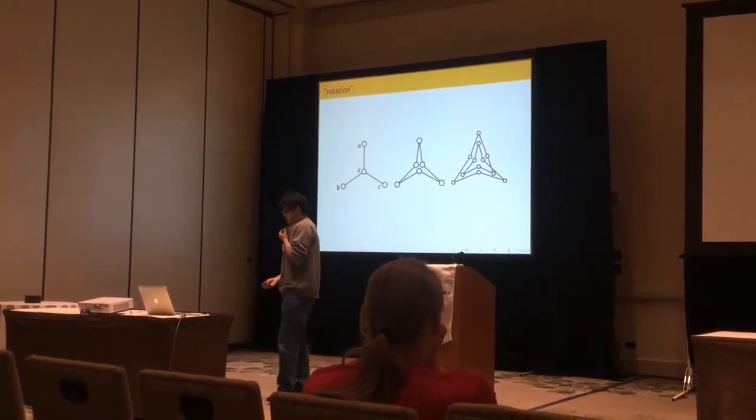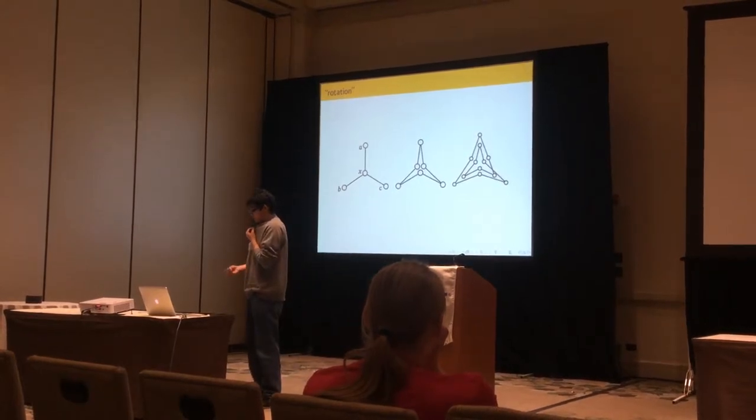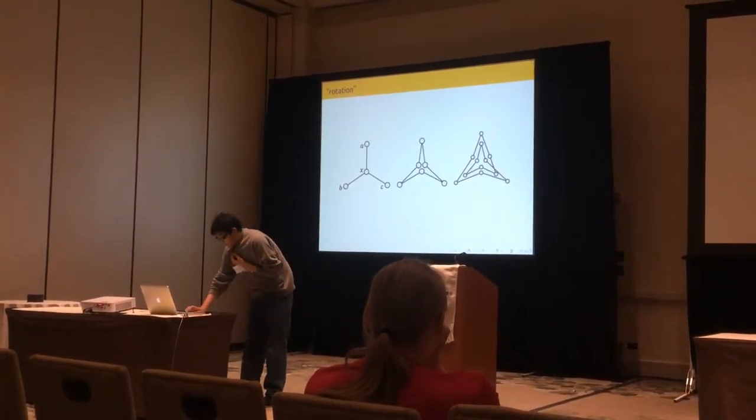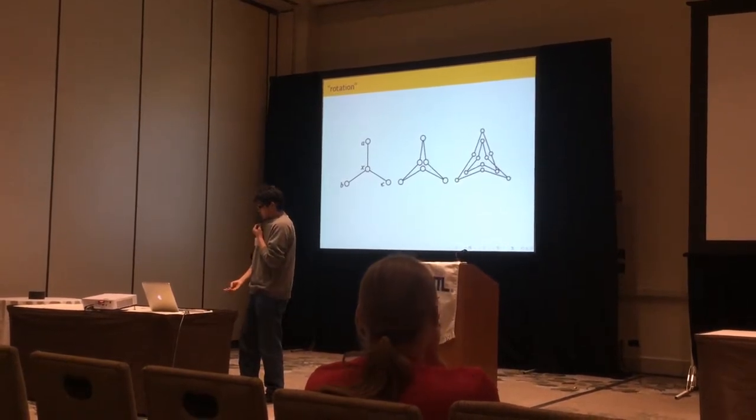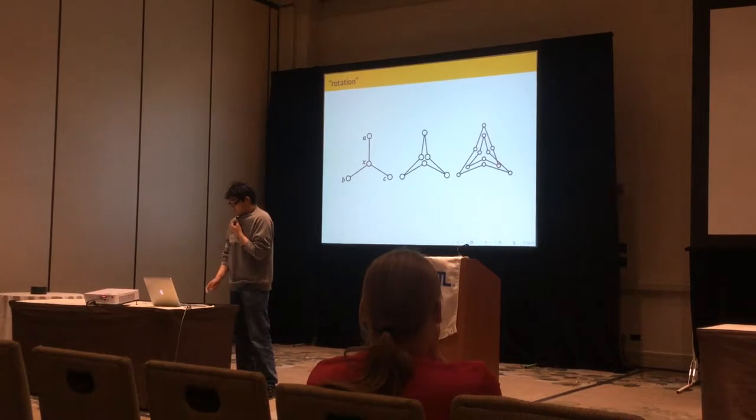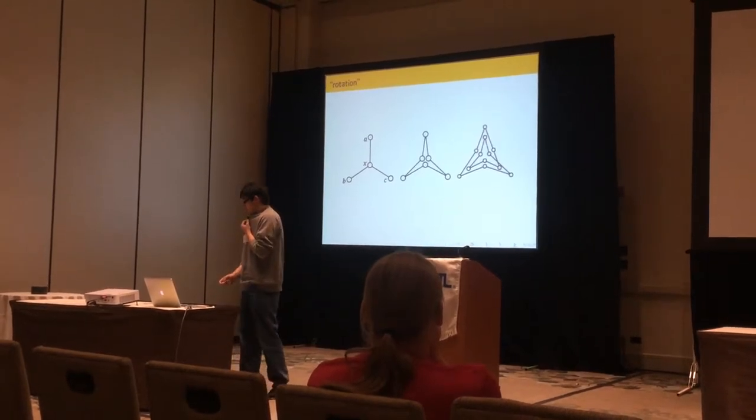So there's another way that a polygon may not be a weakly simple polygon. So consider the polygon A, X, B, X, C, X. This is weakly simple. But the polygon A, B, X, C, X, A, B, X, C, X...